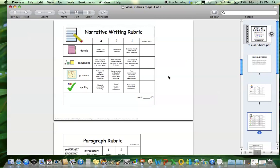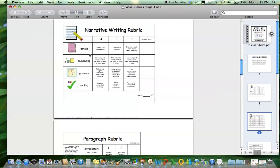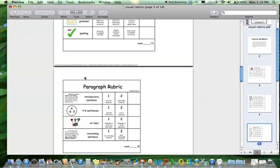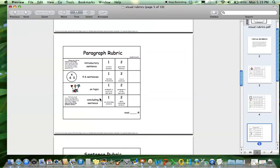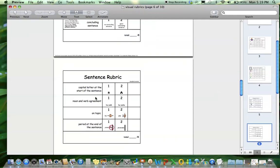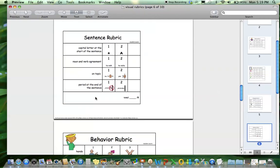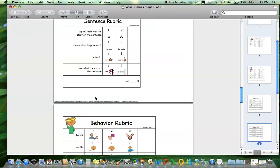Next is a narrative writing rubric, which works on looking at details, sequencing, grammar, and spelling. Next is just a basic paragraph, so this is for my guys that are just starting to write a paragraph, just getting those very basic components included. Here's a sentence rubric, so even looking at that smallest piece of writing, just getting a complete sentence.